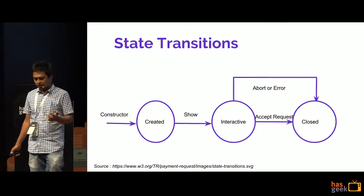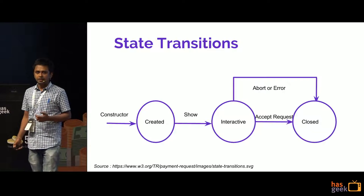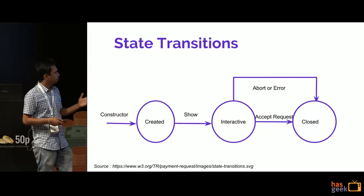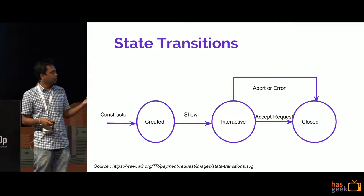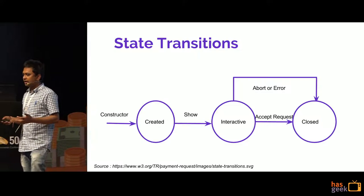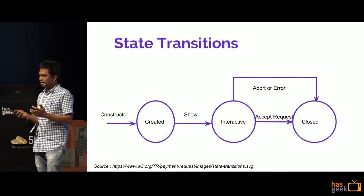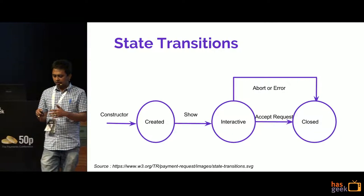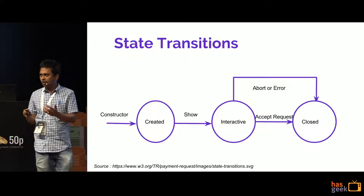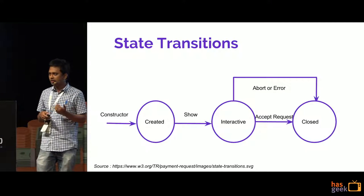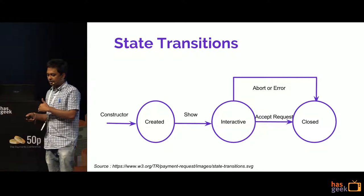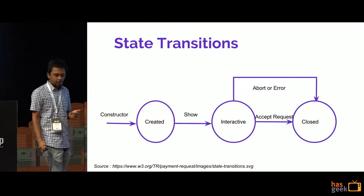A payment request can have three states: after construction it's in a created state; once you call show() it goes to an interactive state where only the browser has control; and once payment completes or is aborted, control returns to the content — either as an accepted request, an abort, or an error, bringing it back to the closed state.